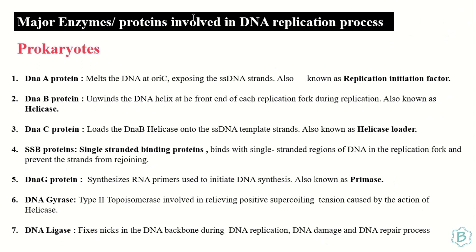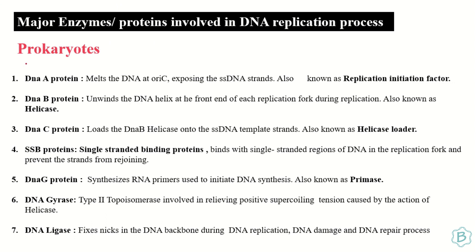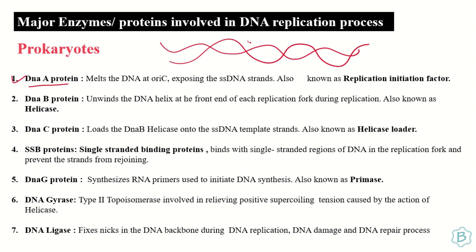Now, getting into the major enzymes and proteins taking part in DNA replication, we will first discuss prokaryotes. The very first protein is the DnaA protein. Every time the DNA has to replicate, it must start at a specific region known as the ORI, or origin of replication. When replication has to start inside a bacterial cell, the DnaA protein goes and binds to this ORI and starts melting the DNA, because replication can only happen when the DNA gets melted down.